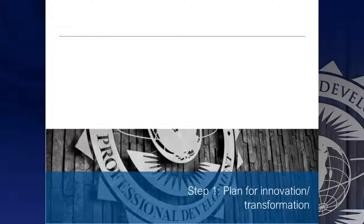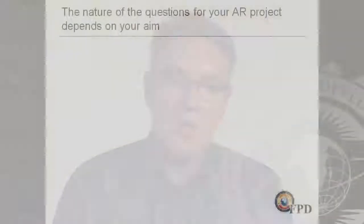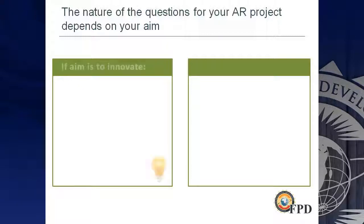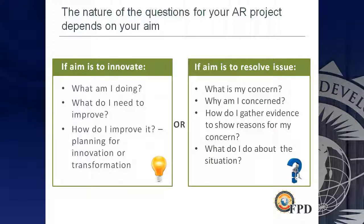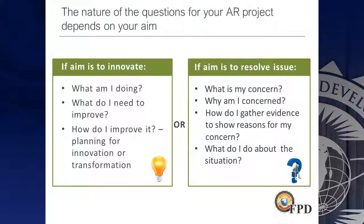In step one, you have to plan for your innovation. If your aim is to innovate, the questions you ask are: what am I doing? What do I need to improve? How do I improve it? What's the innovation I'm going to introduce? If it's a problem, then the questions are: what is the problem? What is my concern? Why do I see this as a problem? And what intervention can I do to address this problem? It's got to be a problem that applies to you — one that you can fix.